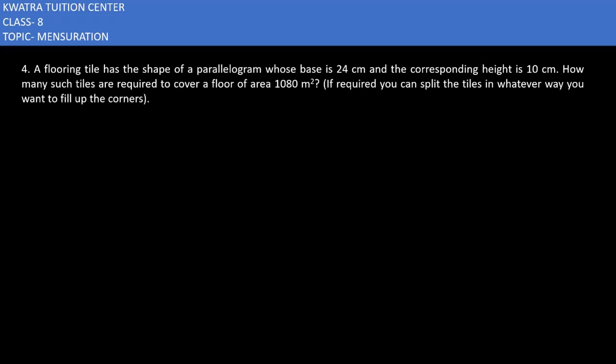Let's start with question number four. You are given a flooring tile that has the shape of a parallelogram whose base is 24 centimeters and the corresponding height is 10 centimeters. How many such tiles are required to cover a floor of area 1080 meter square? The area of one flooring tile will be equal to base into height, which is 24 into 10.